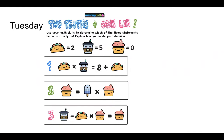The first equation has taco, 2, times coffee, 5, equals 8 plus taco. Well, that would be 2 times 5, 10, equals 8 plus 2, 10. So that one's true.